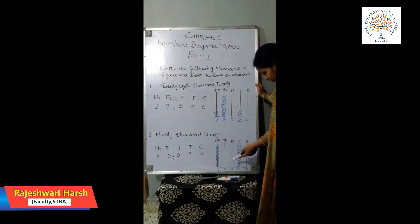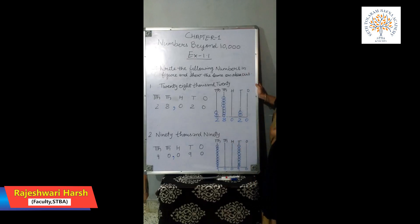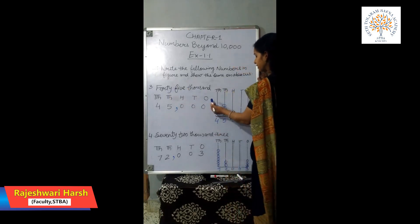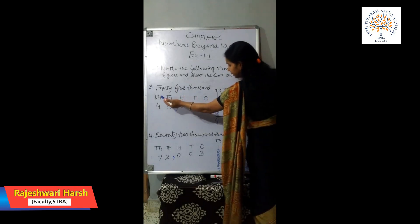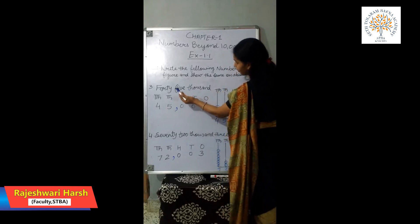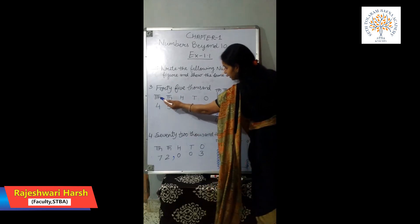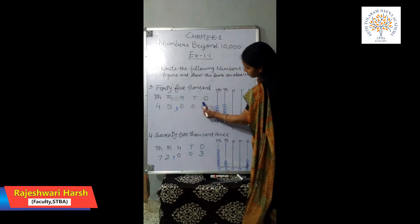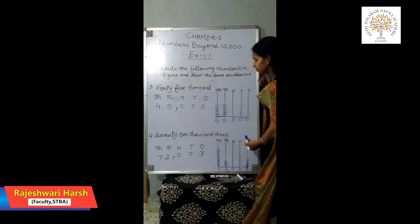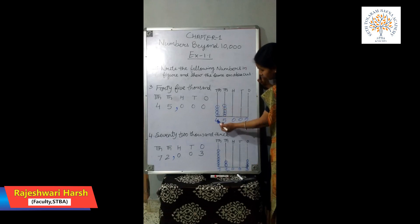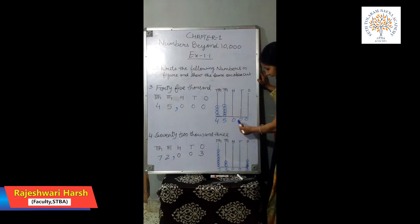Third part of Question 1: 45,000. Write ones, tens, hundreds, thousands, and ten thousands. 45,000 means write 4 on the ten thousands place and 5 on the thousands place. There are no digits in the ones, tens, or hundreds places, so write 0 there. On the abacus, draw 4 beads on the ten thousands place and 5 beads on the thousands place. No beads on hundreds, tens, or ones.